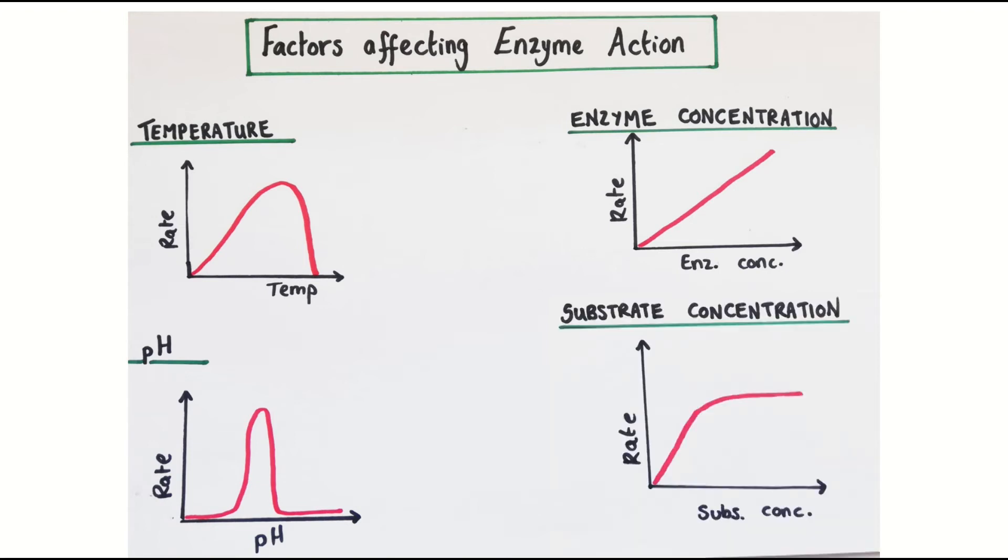A similar thing happens with substrate concentration. If we increase the substrate concentration, more enzyme-substrate complexes form. But once every active site is working at full capacity, the rate cannot go up any further unless more enzyme is added. That's why the graph levels off.